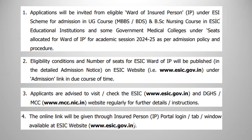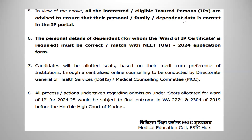The online link will be given through the Insured Person ward login tab available at the ESIC website. From this, you will get the online link to get the IP certificate. IP certificate means Insured Person certificate. With this IP certificate only, you have to appear for All India ward counseling to get admission in ESI colleges and in some government medical colleges. The fifth point is: all interested eligible persons are advised to ensure that their personal family dependent data is corrected in the IP portal. To get this IP certificate, first you have to make sure your data is correct. Otherwise, your application will be rejected.